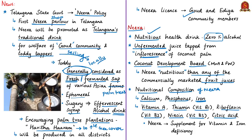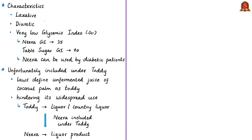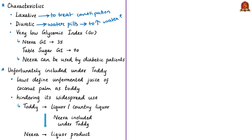Neera acts as a laxative, useful to treat and prevent constipation, and also as a diuretic — diuretics are also called water pills, used to increase the amount of water and salt expelled as urine — helpful in treating high blood pressure. Neera also has a very low glycemic index (GI) of 35, compared to normal table sugar which has a GI of 70, meaning it releases glucose slowly and steadily.